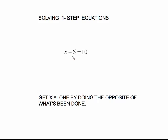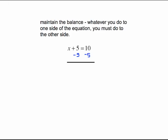In this case, x plus 5, what's been done to x is it's had 5 added to it. We need to do the opposite, which is subtract 5. We have to maintain the balance. Whatever you do to one side of the equation, you must do to the other side. So our choice was to subtract 5 because we want those 5s to cancel out, but we must also subtract 5 from the other side to keep things balanced.